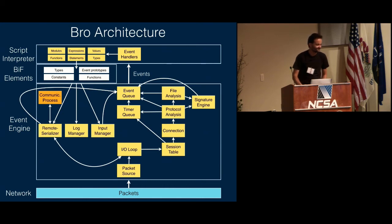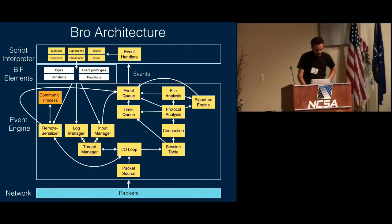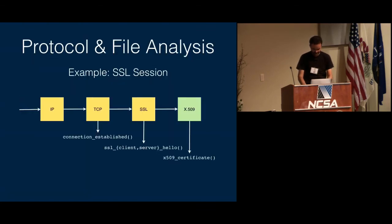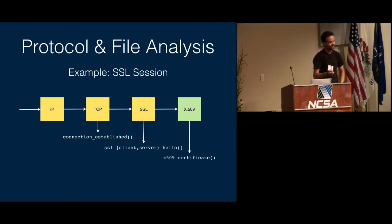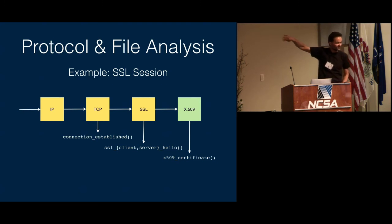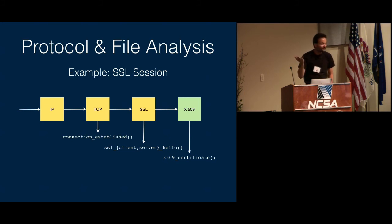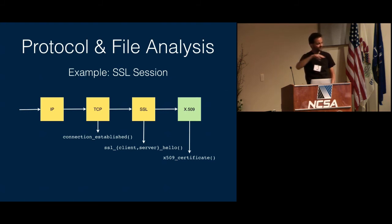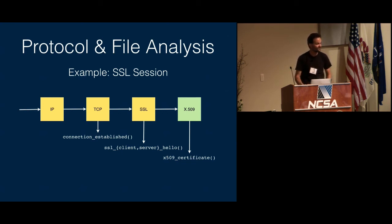Q: How does the DPD analysis pipeline change for UDP and other non-TCP IP protocols? A: Not much. There's a corresponding UDP analyzer instead of TCP, and for DNS for example there'll be a DNS analyzer on top of the UDP analyzer — conceptually the same. The main difference is that the UDP analyzer obviously doesn't do any reassembly. The TCP analyzer puts data in order and forwards it as a stream, so the SSL analyzer doesn't need to worry about packet boundaries. For UDP that's not the case, but it doesn't make sense anyway. Conceptually there's not much difference.